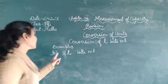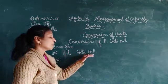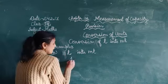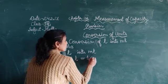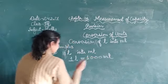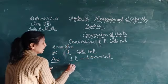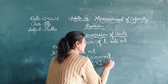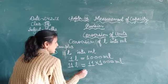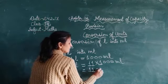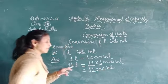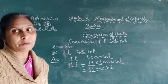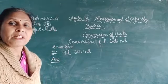The next example: eleven litres converted into millilitres. First we know that one litre equals one thousand millilitres. In the second step, eleven litres equals eleven multiplied by one thousand millilitres, which equals eleven thousand millilitres. This way we have converted litres into millilitres.